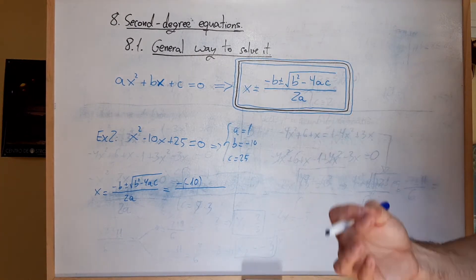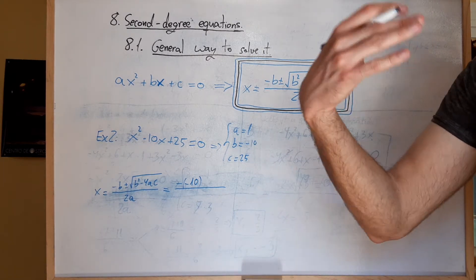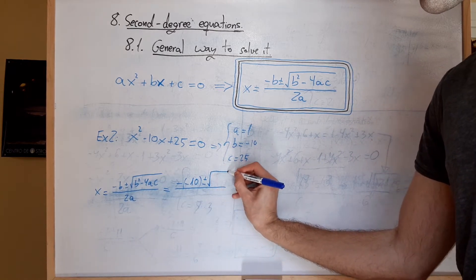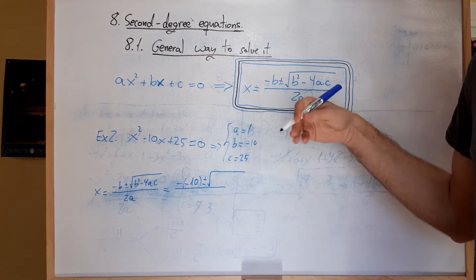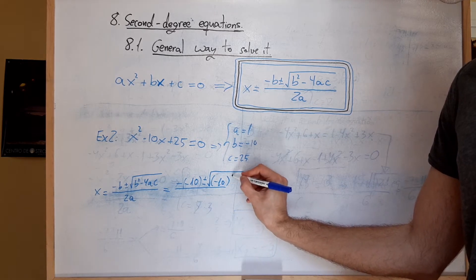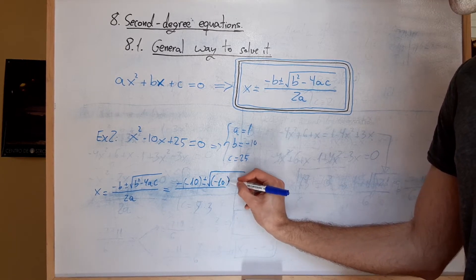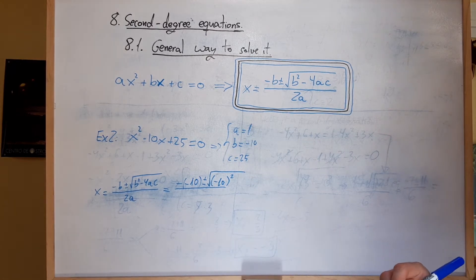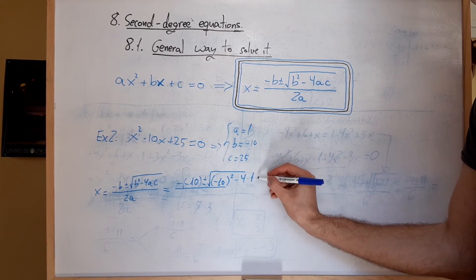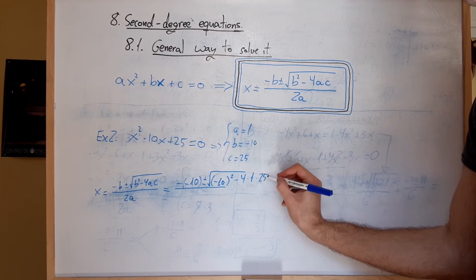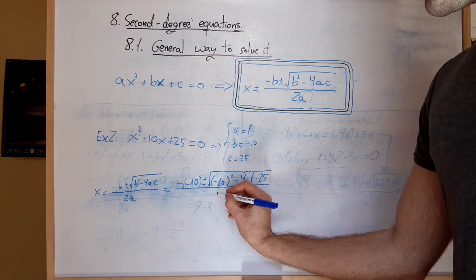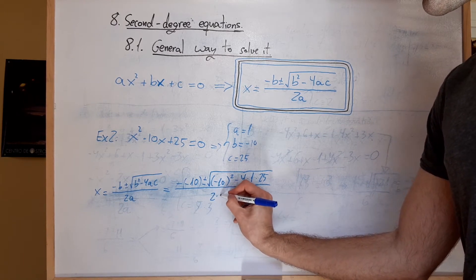Be really careful about this step, please. I'll repeat it later. So: minus b plus-minus square root of b squared, which is minus 10 with its sign in between parentheses, because it's all b which is squared, minus 4 times a which is 1, times c which is 25. Everything over 2 times 1.